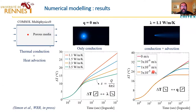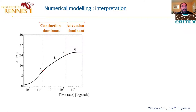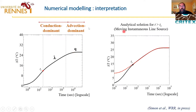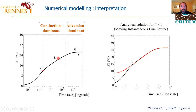Here we have some numerical modeling showing what we expect: the temperature increase through time with the conduction-dominant period and then an advection-dominant period. We want to deduce the thermal conductivity and the groundwater flux. We can use solutions like the moving infinite line source solution that already exists and has already been applied. It reproduces very well the evolution of temperature at greater times, and it allows you to deduce the thermal conductivity and the groundwater discharge.